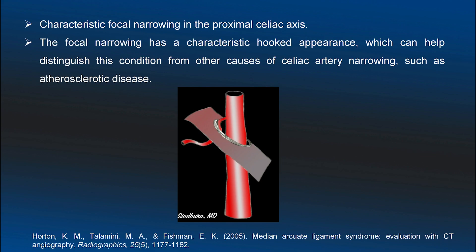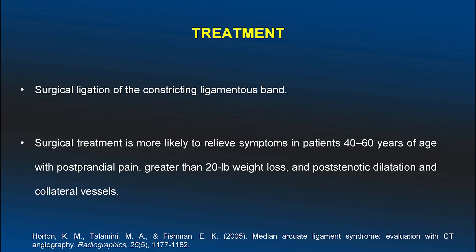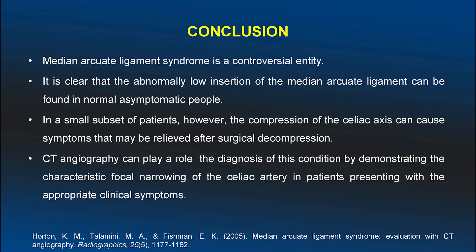This characteristic appearance also helps differentiate it from normal atherosclerotic celiac disease. Treatment is surgical ligation of the ligamentous band, which is most useful in patients aged 40 to 60 with postprandial pain, weight loss greater than 20 pounds, and who have developed collateral vessels.